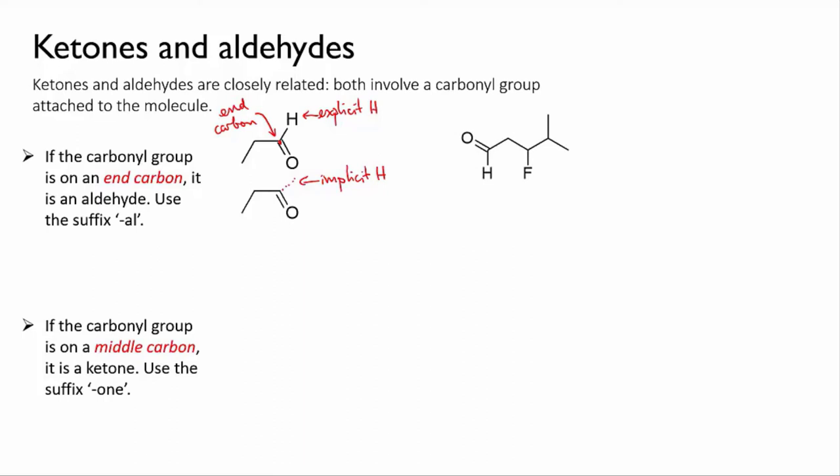So let's try naming this. The longest chain that includes the functional group is five carbons. Don't forget to include the carbon that's part of the carbonyl. So it's based on pentane, but it's an aldehyde, so we're going to call it pentan-al. Now we number the chain starting from the aldehyde group, and we find that we have three fluoro and four methyl as our substituents. So we put all that together, and we alphabetize the substituents, and so we get three fluoro, four methyl, pentan-al.